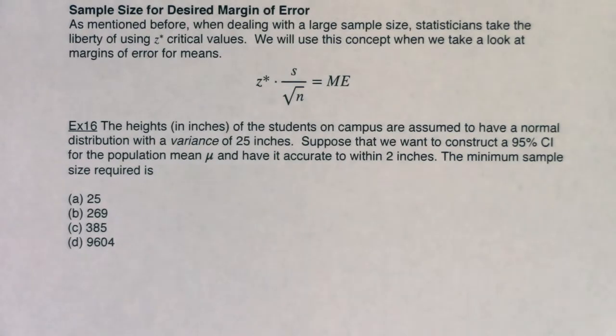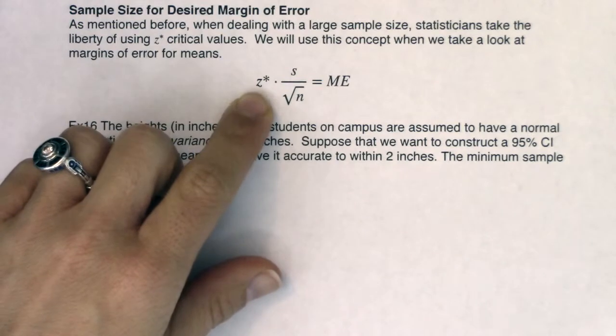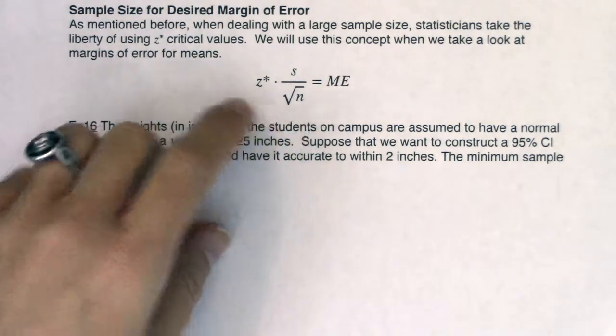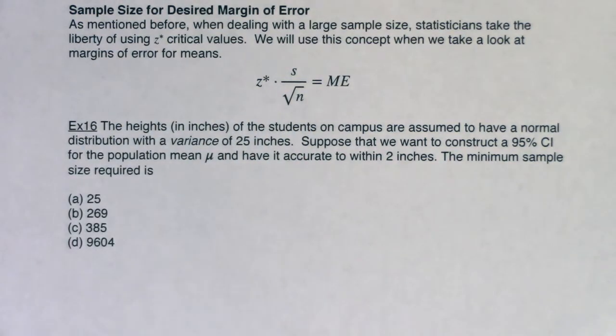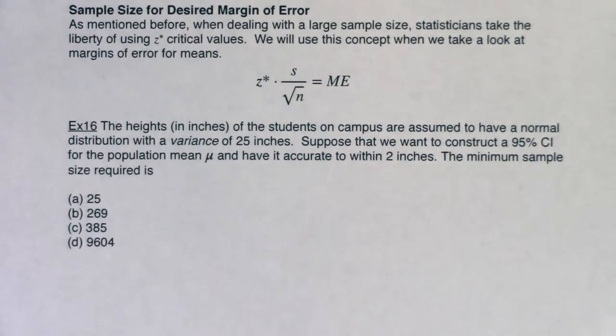All right guys, so let's look at these margin of error problems for mean land. Now this will be the one time that I'm going to have us use the Z star confidence critical value for these problems, and it's only because it's that much more cumbersome when you're trying to do it on the t distribution. So just for ease, we're going to use this Z star critical value here.